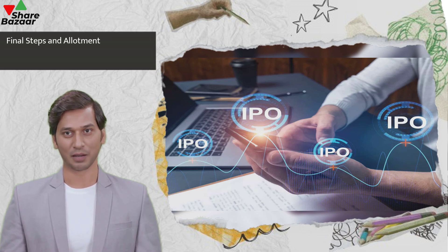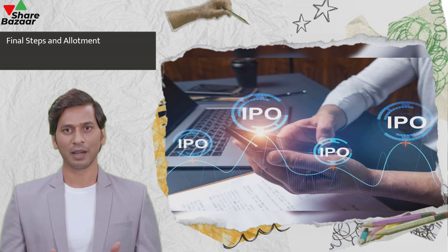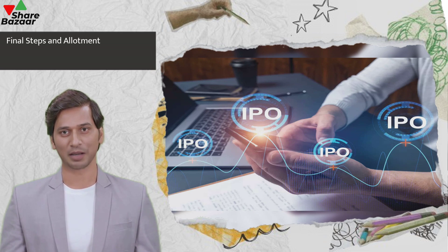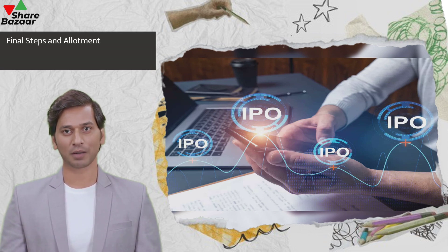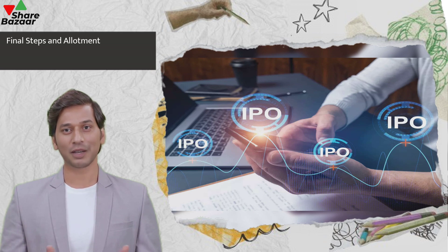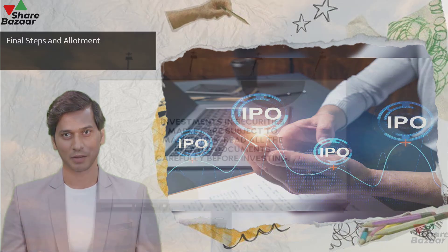Successful bidders receive a confirmatory allotment note (CAN) within 6 working days, which are then credited to your Demat account. Once the shares are listed on stock exchanges, you can choose to hold or trade them.